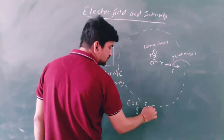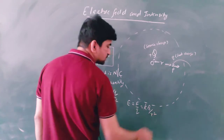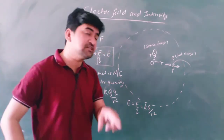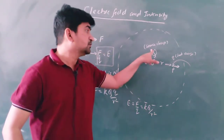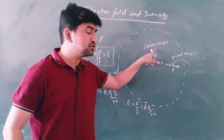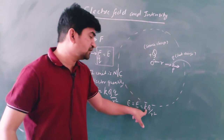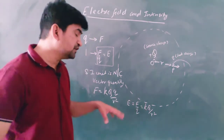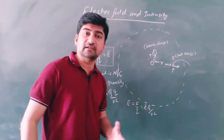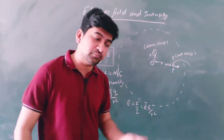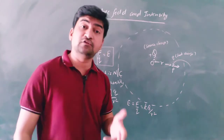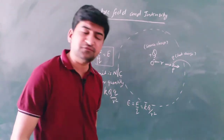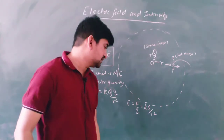The electric field due to a point source charge is given by the formula E equals KQ divided by R squared. Now we will also consider other formulas: electric field due to a dipole, electric field due to linear charge distribution, and electric field due to surface charge distribution.